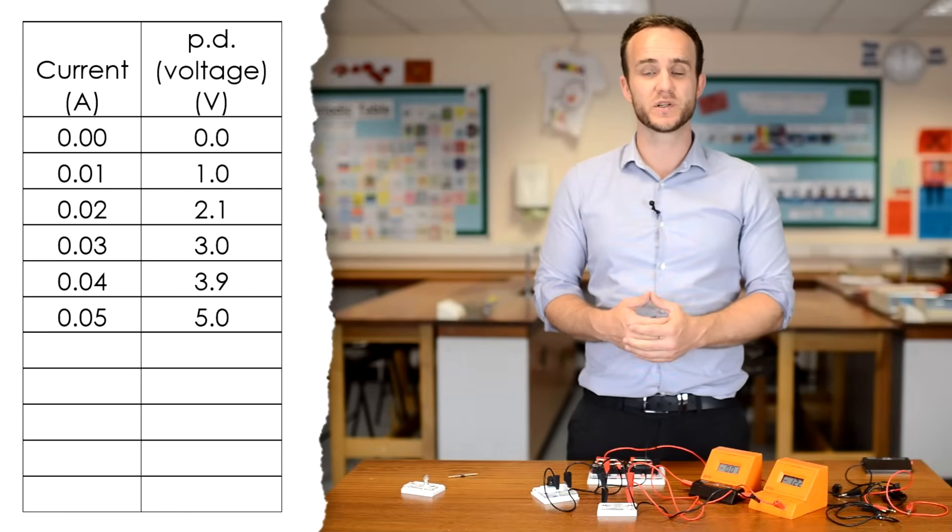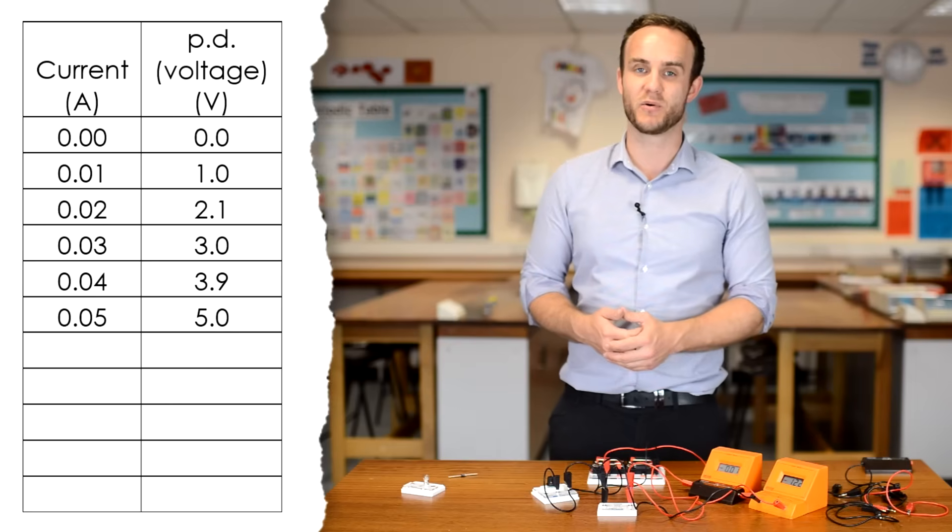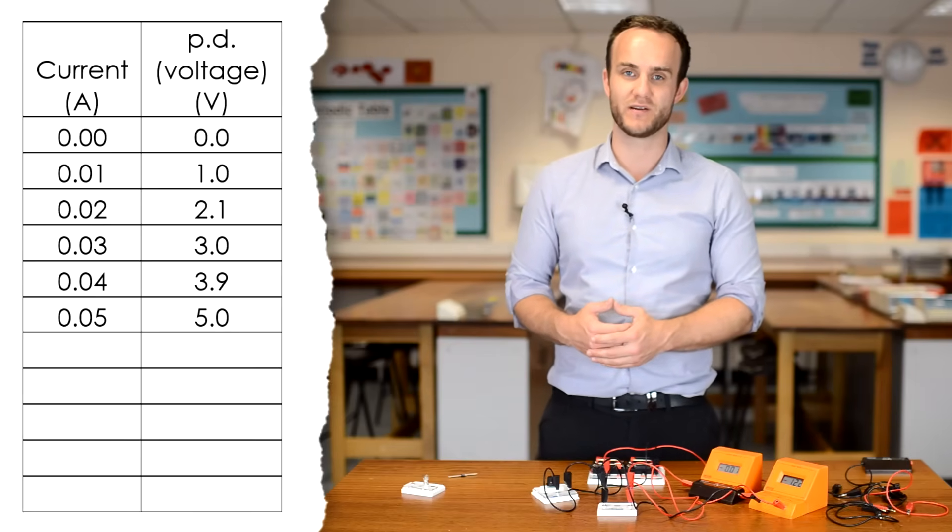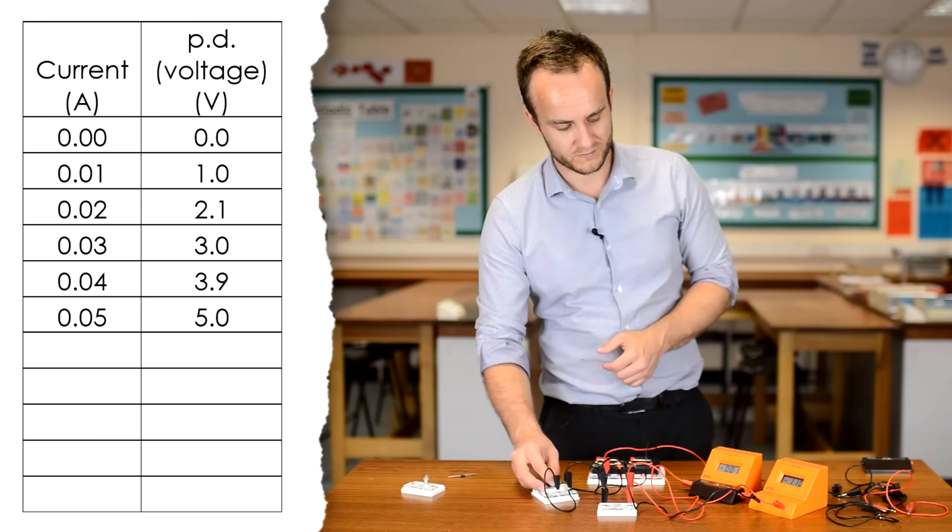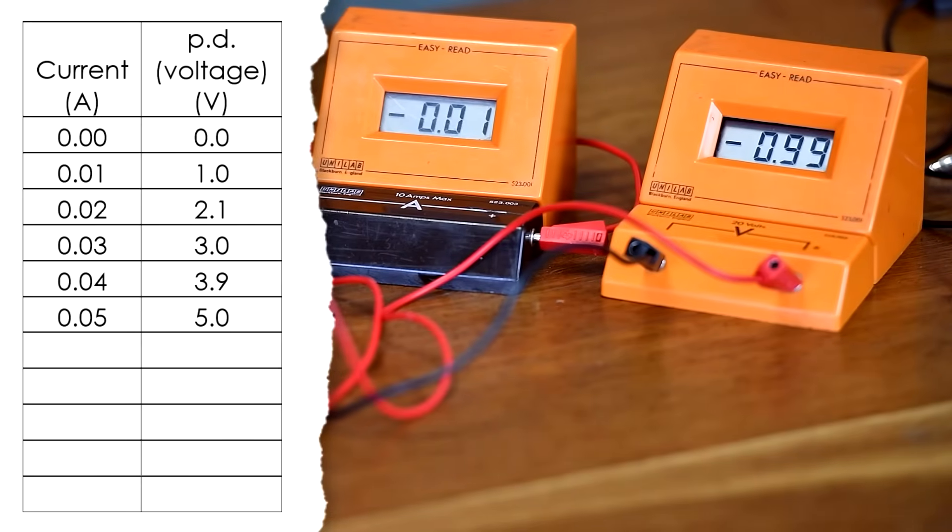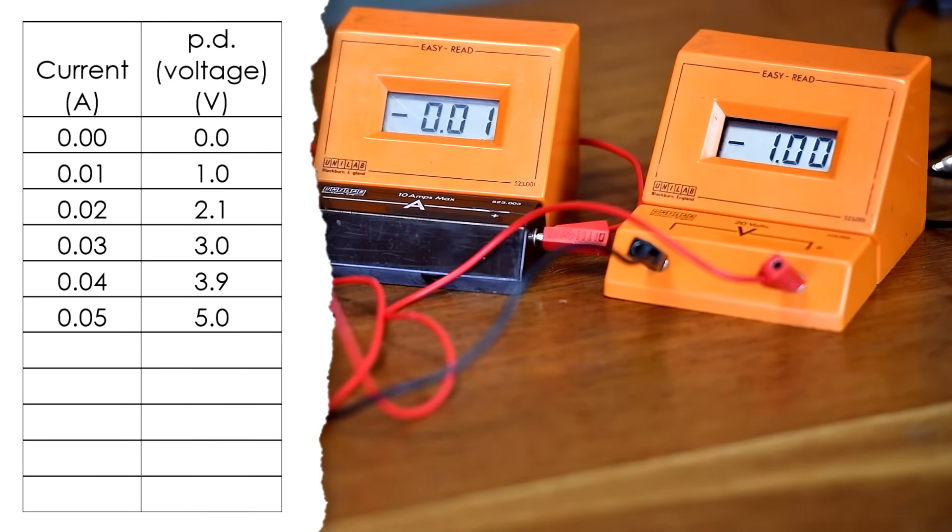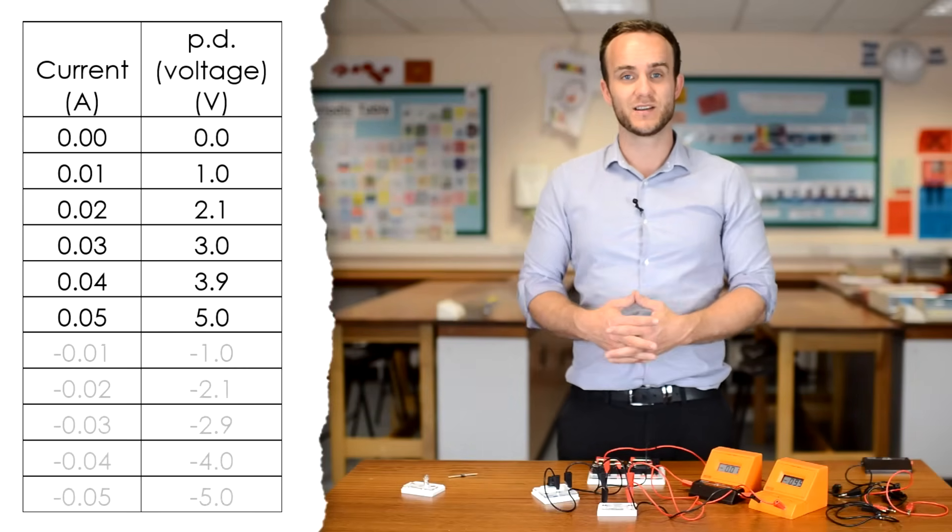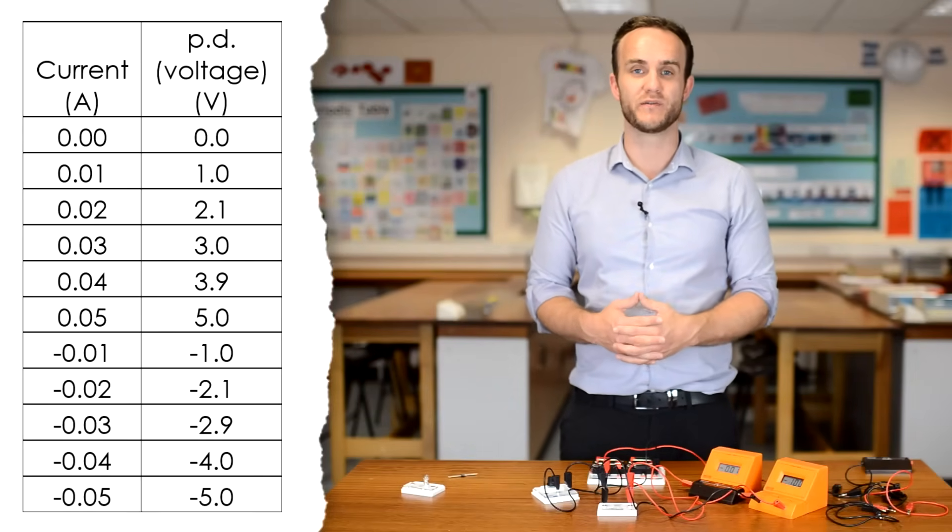But we are going to repeat the experiment now, starting at minus 0.01 amps and then going down to minus 0.05 amps. Not a big surprise. The PD at minus 0.01 amps is minus 1.0 volts. Going down to minus 0.05 amps, this is what my voltages were for those.